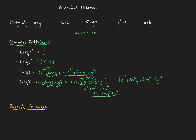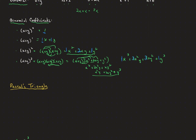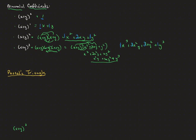Mathematicians in the past were very interested in powers of binomials. Blaise Pascal, a French mathematician from the 1600s, looked at these coefficients and noticed a pattern. When written as a triangle, the coefficients go: row zero is just 1; row one is 1, 1; row two is 1, 2, 1; and row three is 1, 3, 3, 1. We call them row zero through row three because they come from (x+y) raised to those powers.